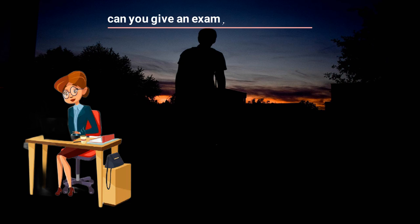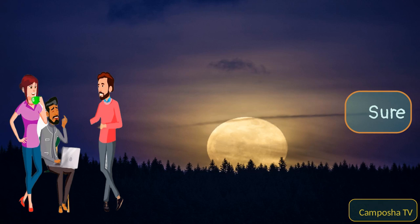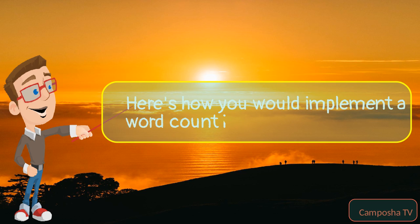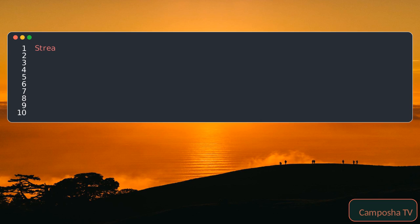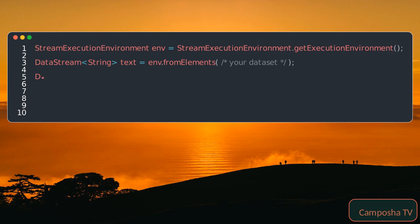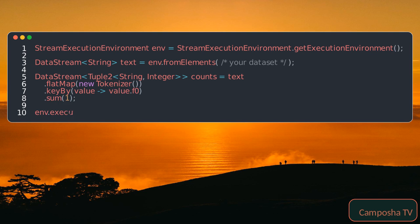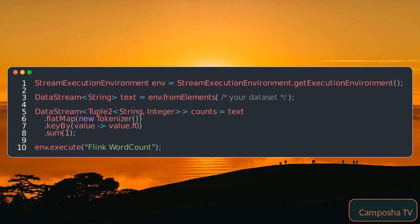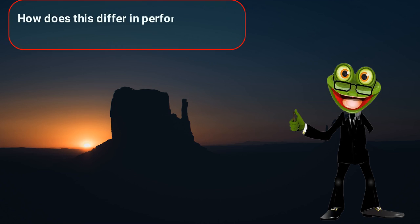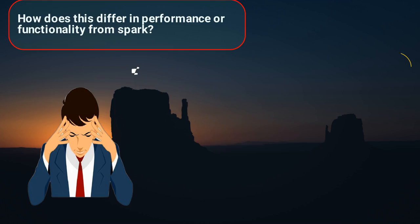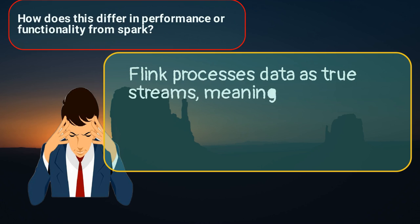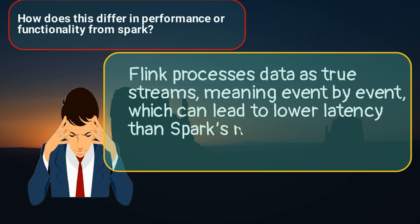Can you give an example of Flink code? Sure. Here's how you would implement a word count in Flink. Flink processes data as true streams, meaning event-by-event, which can lead to lower latency than Spark's micro-batch processing.